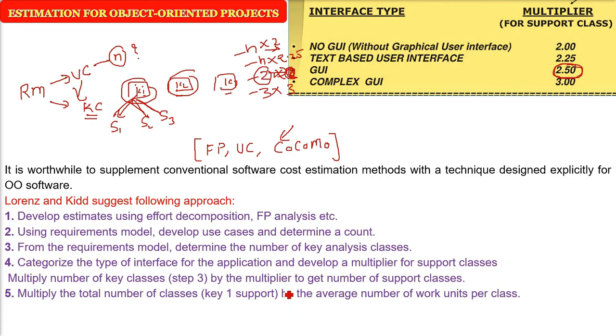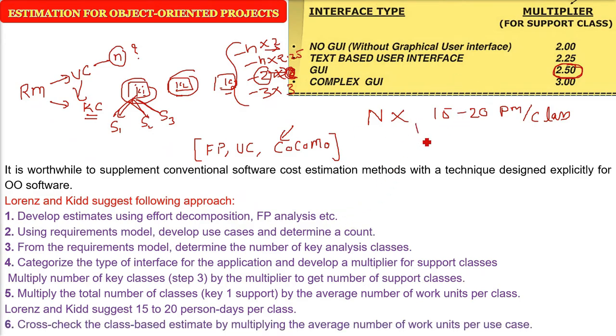Once the total number of classes is known, multiply by the average number of work units per class. Lorenz and Kidd suggest 15 to 20 person-days per class. Multiply the total classes by any number between 15 to 20 that seems appropriate for your particular project.